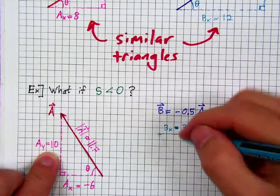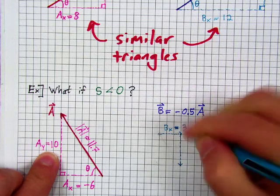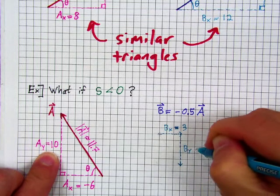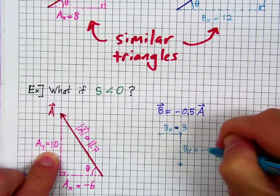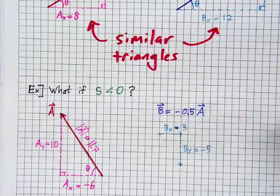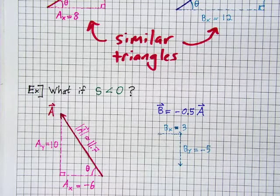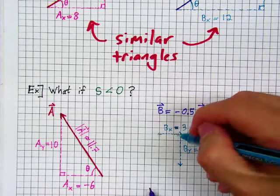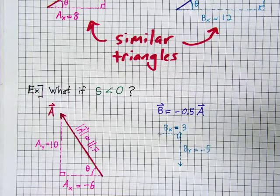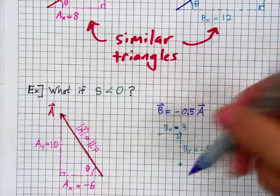So, by is negative 5. Let's go down 5. By is negative 5. And with those components, we can now draw in b. Those are the legs of our right triangle. We can draw in the hypotenuse.